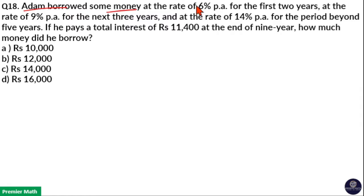Adam borrowed some money at the rate of 6% per annum for first 2 years, at the rate of 9% per annum for next 3 years, and at the rate of 14% per annum for period beyond 5 years. If he pays total interest of Rs 11,400 at the end of 9 years, how much did he borrow?